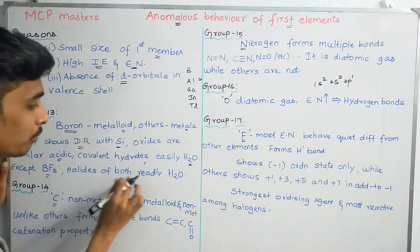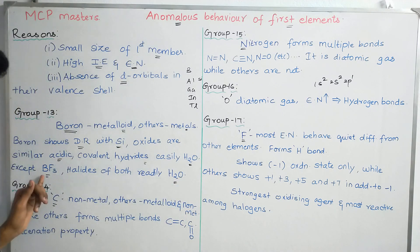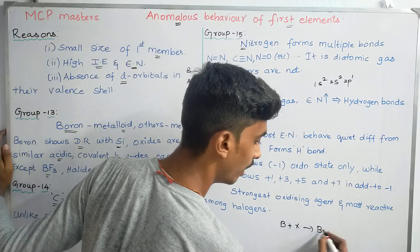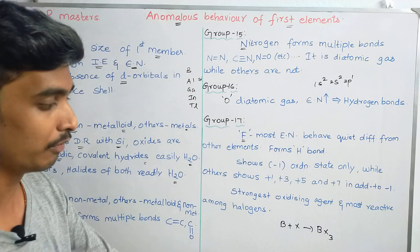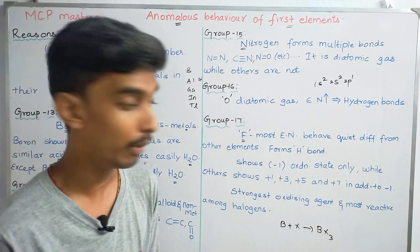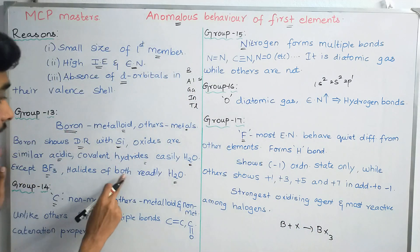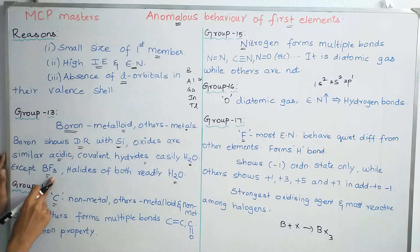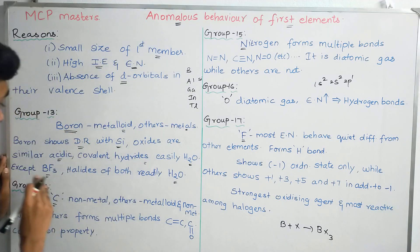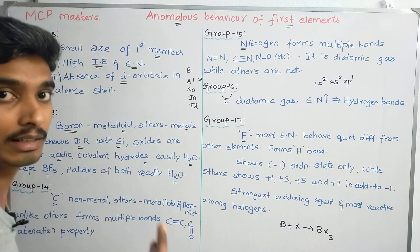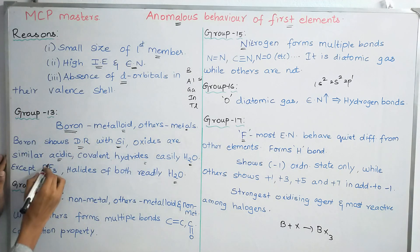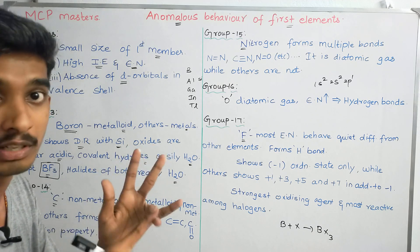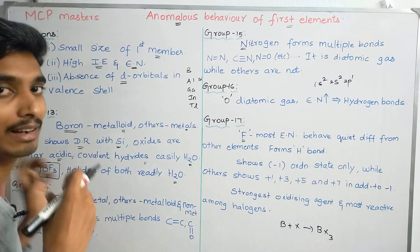All halides of Boron and Silicon are readily hydrolyzed, except BF₃. So except Boron trifluoride, all halides of Boron and Silicon are readily hydrolyzed.